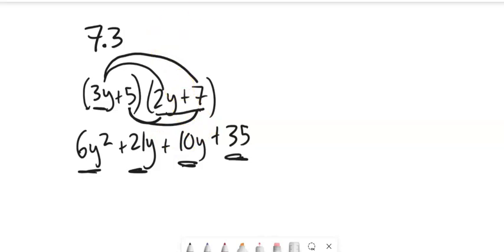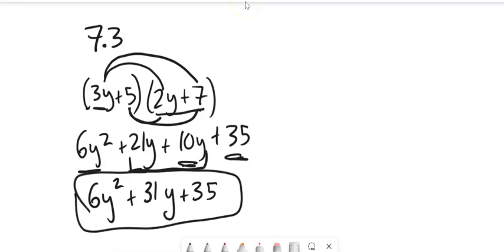But I'm not done because I can actually combine those. So 6y squared plus 31y plus 35. That would be this multiplied out. Notice where that 35 came from - 5 times 7. That first term comes from 3y times 2y. This middle term comes from a combination, 5 times 2 and 3.